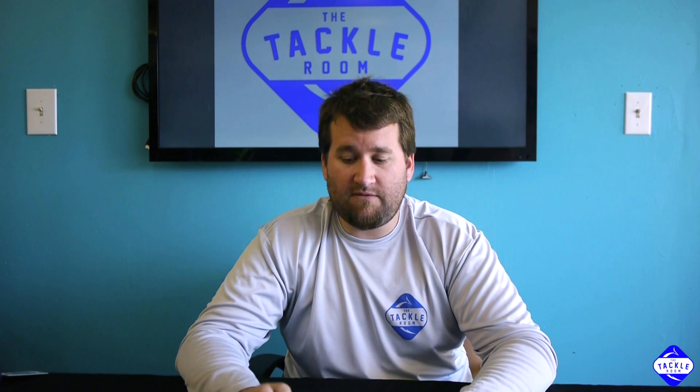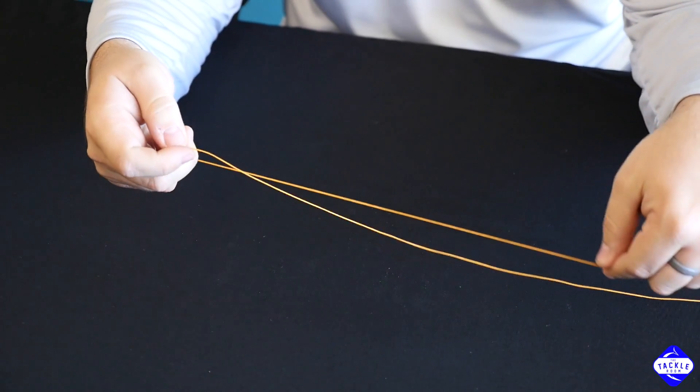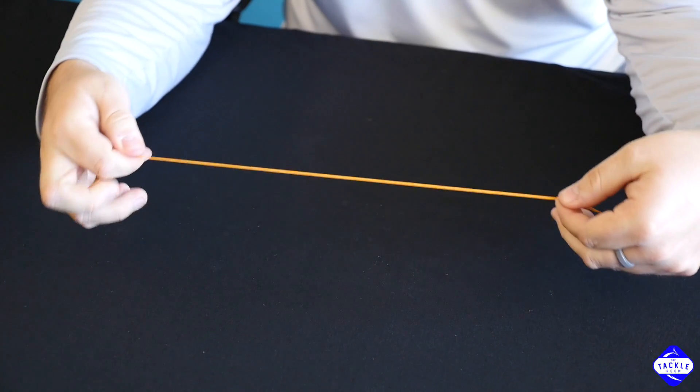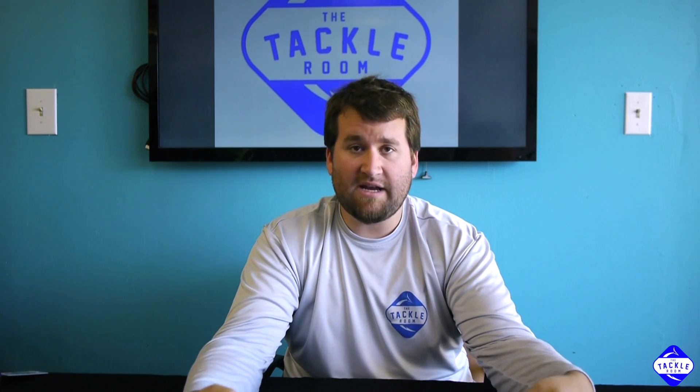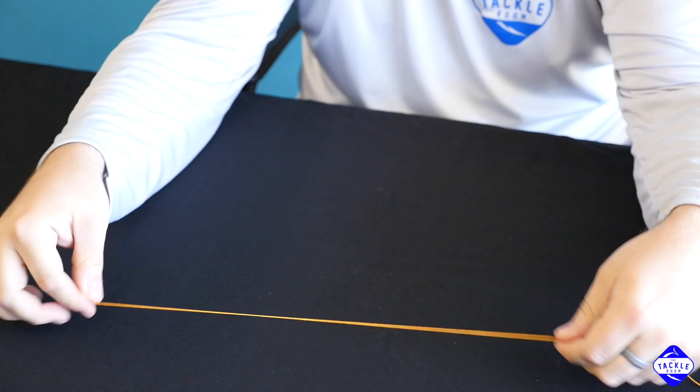One of the best knots to know and most versatile knots out there is the triple overhand knot. You start off by pulling the braid back on itself. Keep in mind, pull back enough to create as much loop as you need.